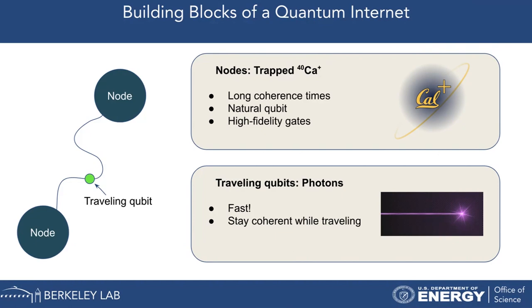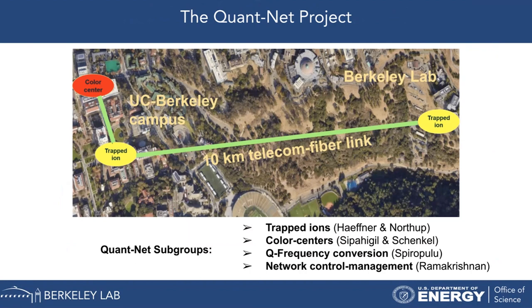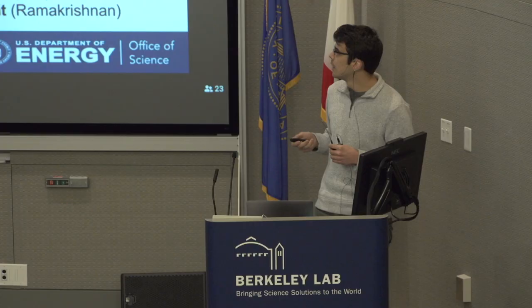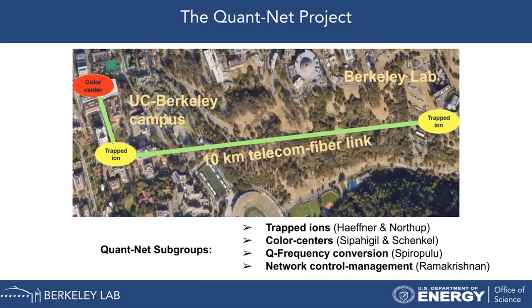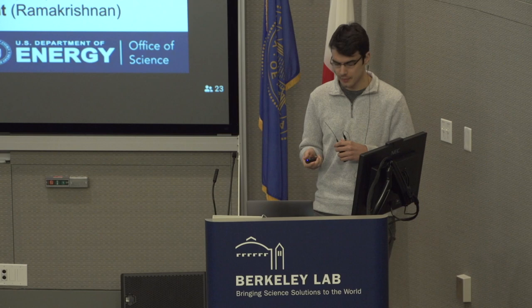Here's a bird's-eye view of the real plan. It says 10 kilometers on the screen because that's the total distance of fiber that's been laid. My piece of the experiment focuses on a five-kilometer stretch of telecom-band optical fiber connecting UC Berkeley's trapped ion node to LBNL's trapped ion node. We'll also eventually interface with a color center qubit being worked on by the Sipa Hegel and Schenkel groups at UC Berkeley. My contingent is the trapped ion group; I work with Hartmut Hefner and Tracy Northup from Innsbruck, a quantum frequency conversion team at Caltech, and Lavanya Ramakrishnan is heading a network control and management team focused on coordinating all the timing needed for these things to work.